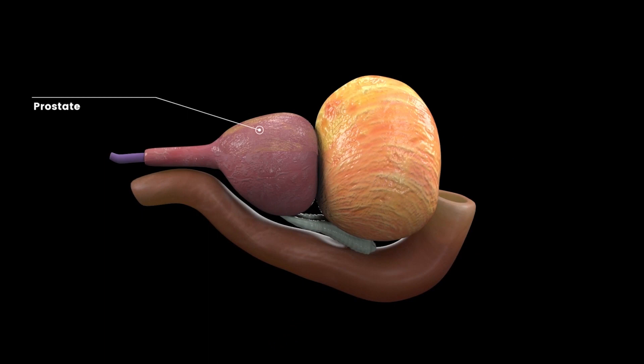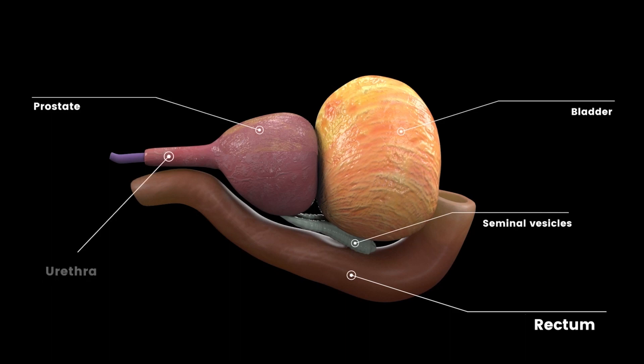The prostate with surrounding structures is supplied by autonomic and somatic branches originating from lower thoracolumbar T11 to L2 and sacral S2 to S4 vertebral centers. Nerve fibers from these centers coalesce to form a plexus of nerves interposed with ganglion cells and fibrofatty tissue.